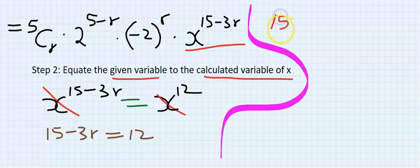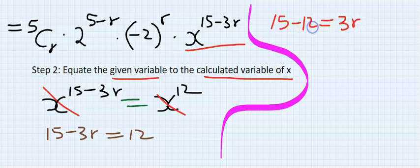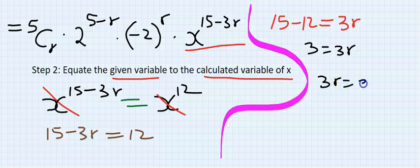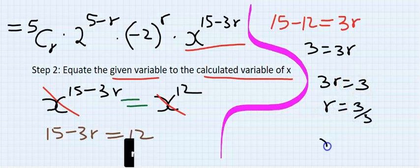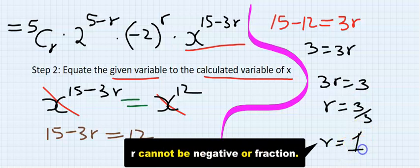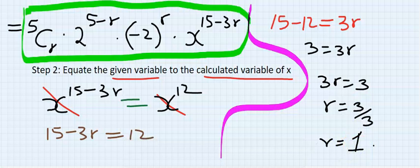I bring the 15 to the other side and the 3r remains, giving 3 = 3r, so r = 3 ÷ 3 = 1. Our r is 1.